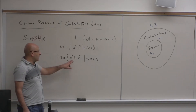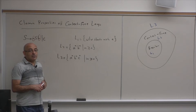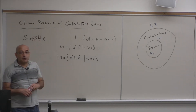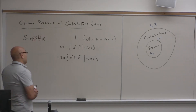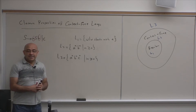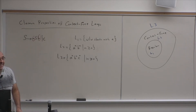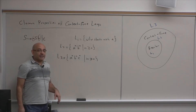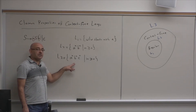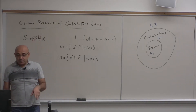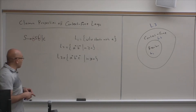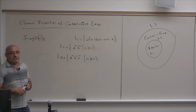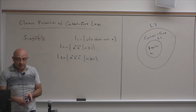Try to think of a context-free grammar for this language. If you come up with one, you will break this whole theory — it would mean there is a bug in the proof that people have come up with to show that this language is not context-free. You would show there is a bug in their proof if you can come up with a context-free grammar for this language.